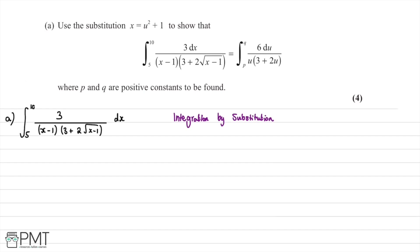In this question we're asked to use the substitution x equals u squared plus 1 to show that the integral from 5 to 10 of 3 divided by x minus 1, multiplied by 3 plus 2 lots of the square root of x minus 1, with respect to x, is equal to the integral with limits from p to q of 6 over 3 plus 2u with respect to u, where p and q are positive constants to be found.